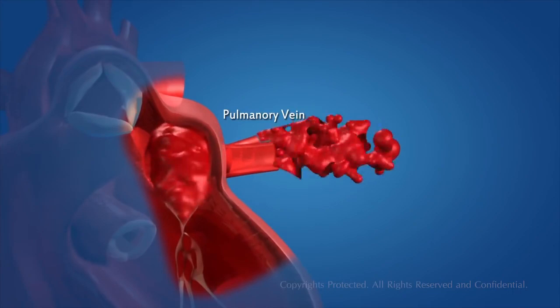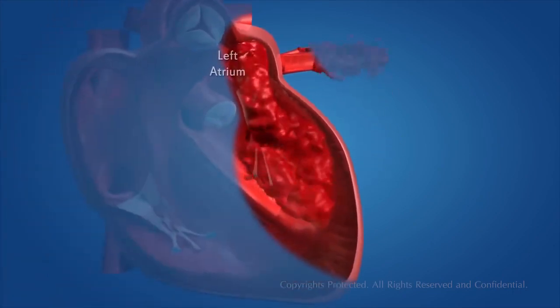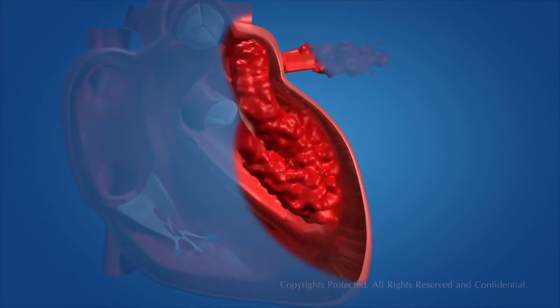The left atrium relaxes and this blood is pumped into the heart. When the left atrium contracts, the left ventricle relaxes simultaneously. The left atrium pushes the blood into the left ventricle through the one-way valve.